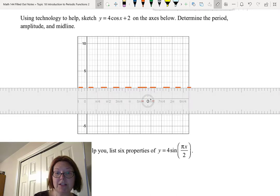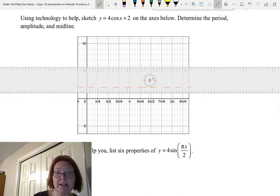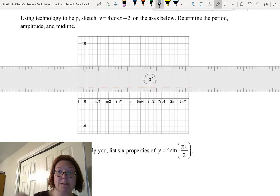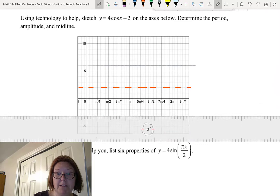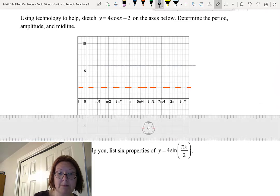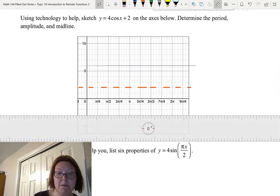I'm also going to sketch in the maximum value just to kind of help me. I'm going to use a pencil to do that. So I'm going to just make a line where the maximum occurs, and I'm going to make a line where the minimum occurs. So the maximum was at the value of 6, and the minimum is at a value of negative 2.